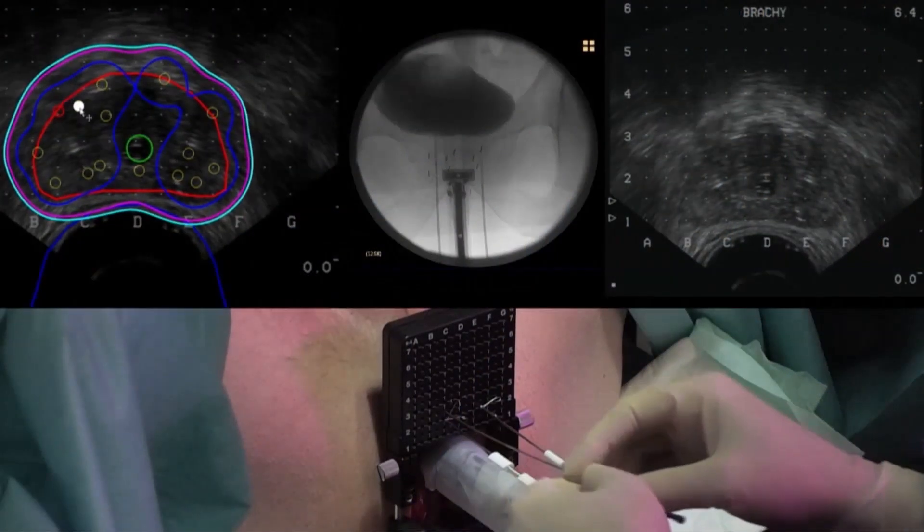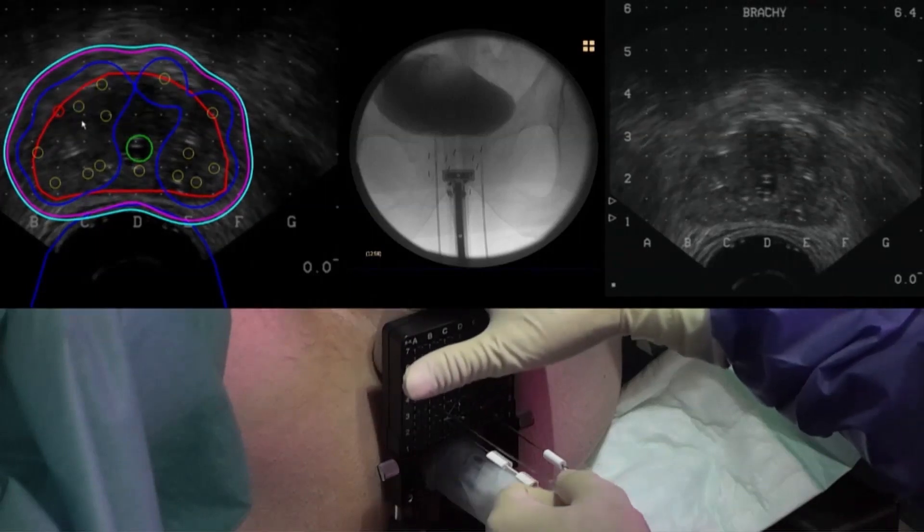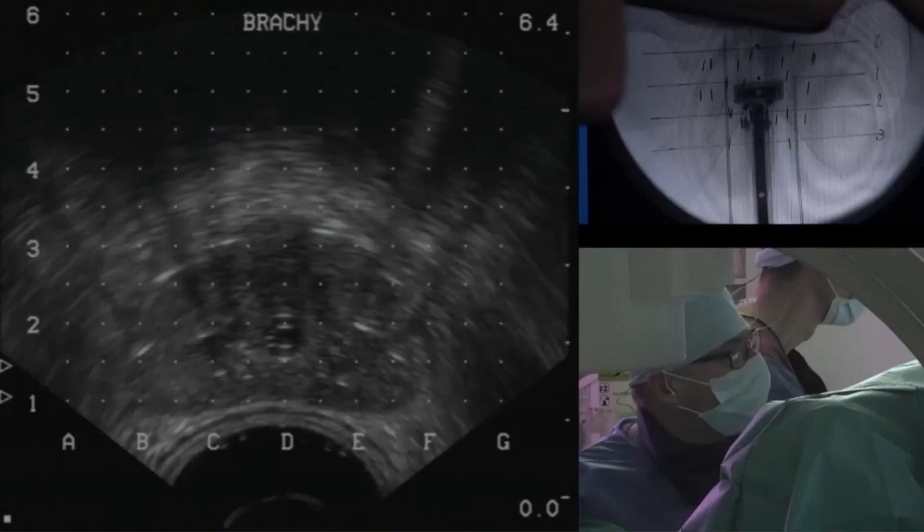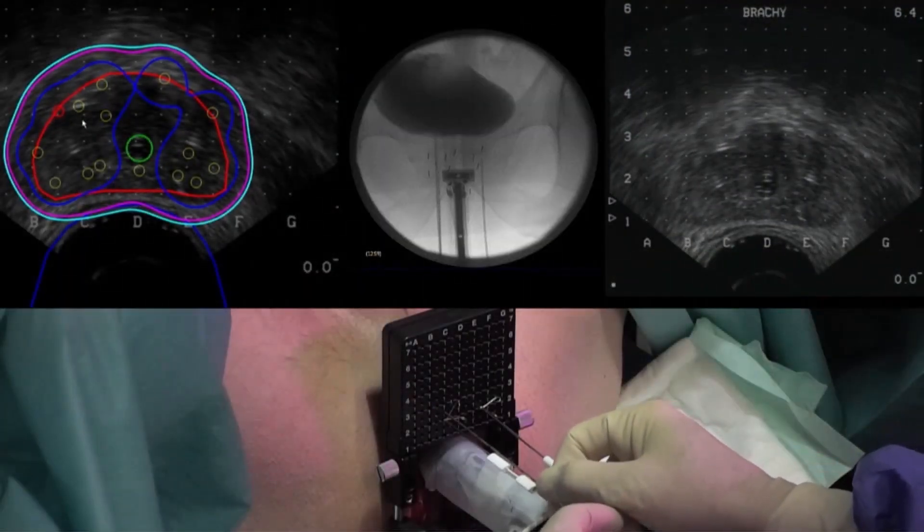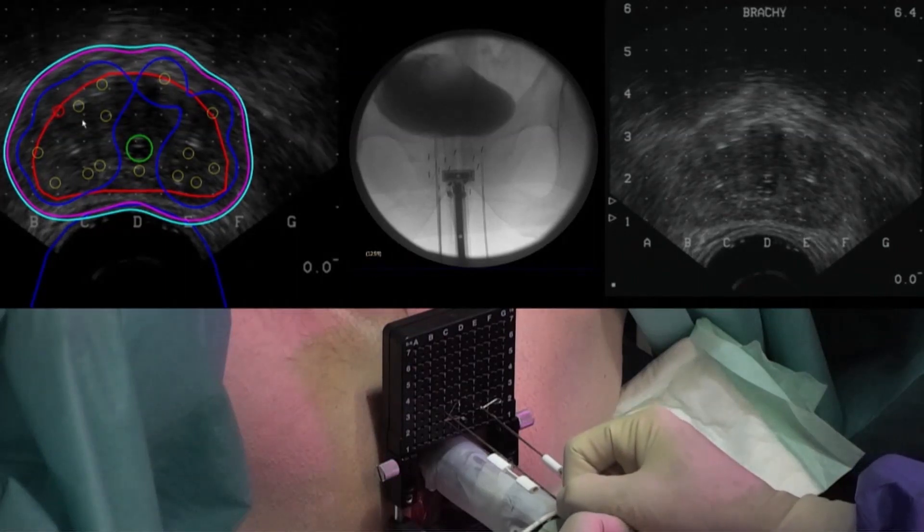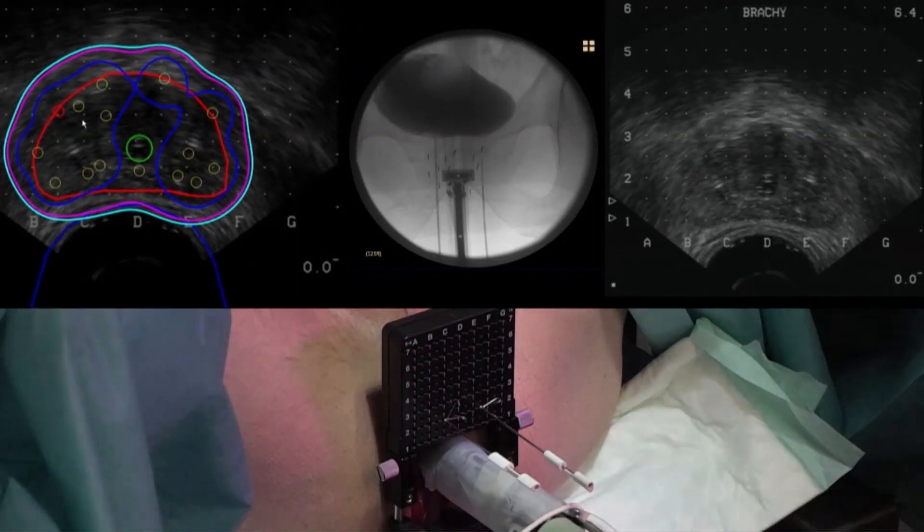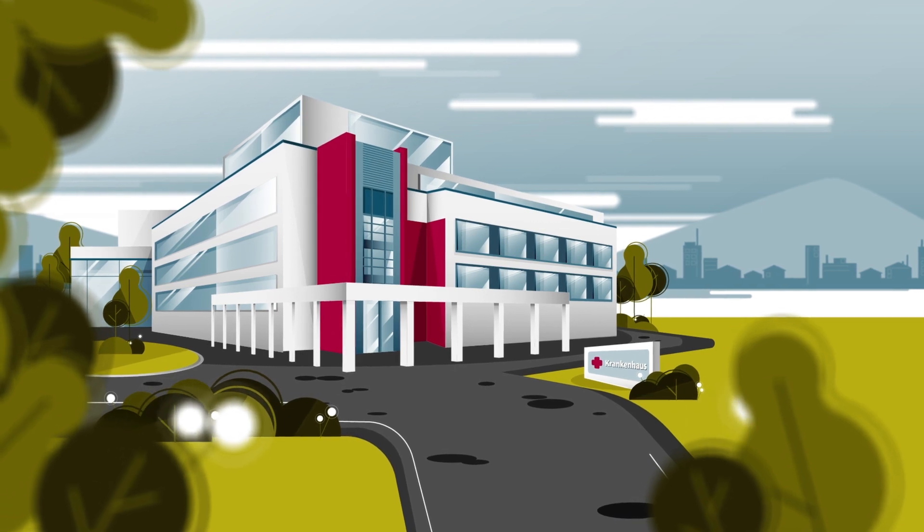The doctor guides the implantation needles into the prostate with the help of a guide called a template grid and inserts the seed chain through them. The exact positioning of the seeds is determined simultaneously with the help of ultrasound and, if necessary, fluoroscopy. The recommended prescription dose of 145 gray is administered precisely internally with a safety margin around the prostate. The risk of seed migration can be reduced to a minimum by using seed chains. The complete treatment takes about 50 to 70 minutes.